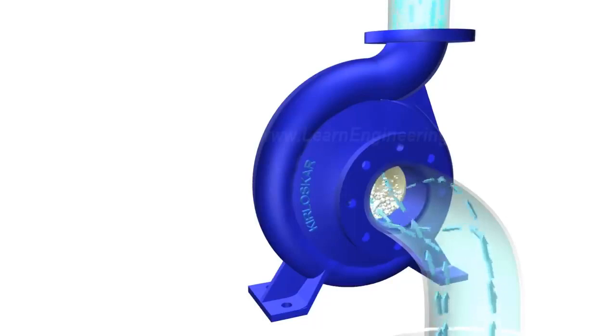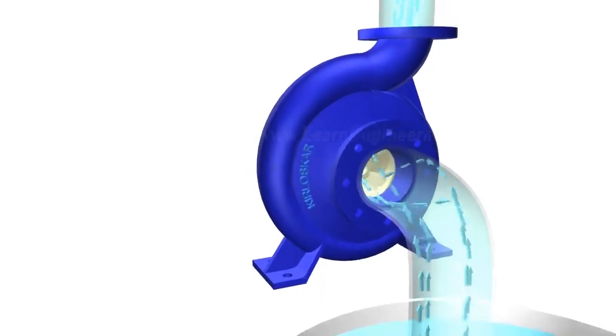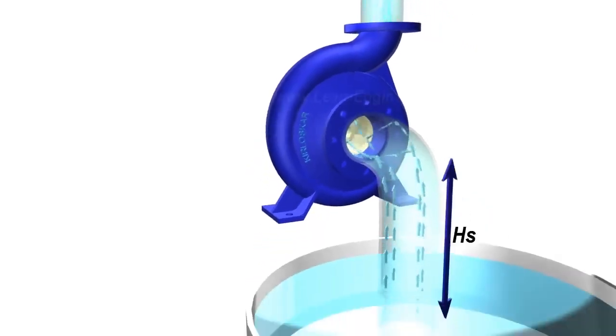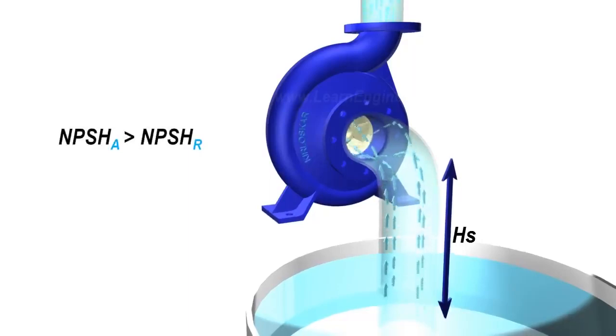This phenomenon is known as cavitation. More the suction head, lesser should be the pressure at suction side to lift water. This fact puts a limit to maximum suction head a pump can have. Careful pump selection is required to avoid problem of cavitation.